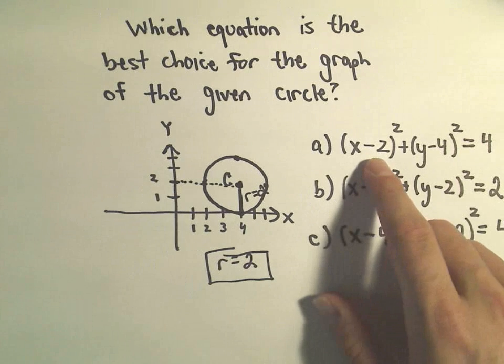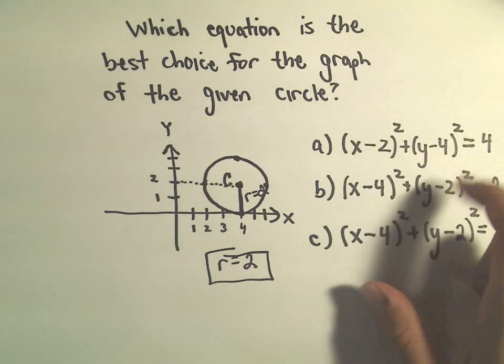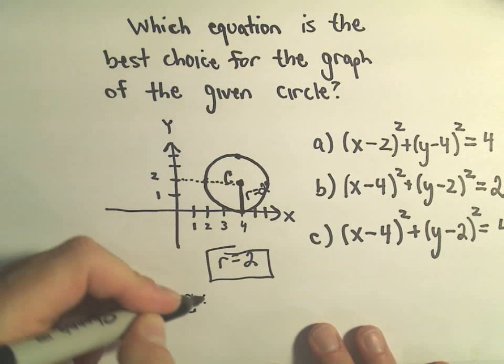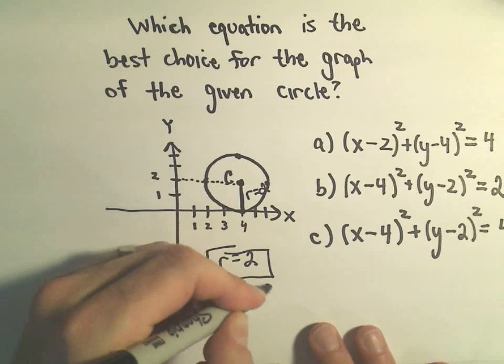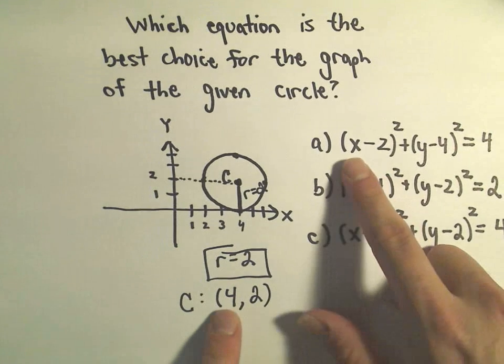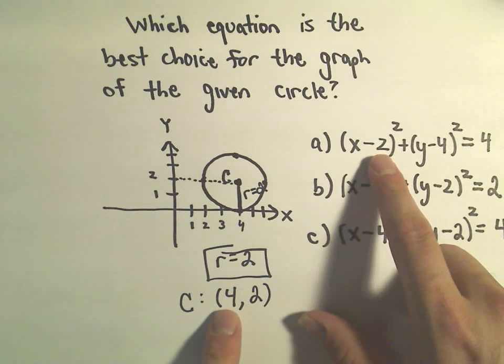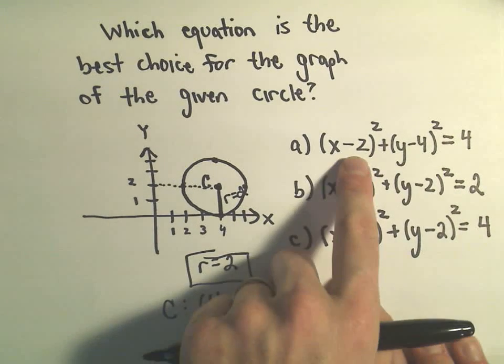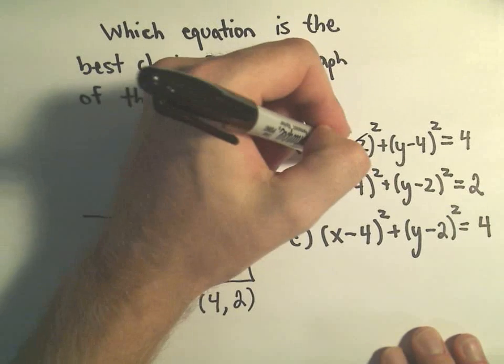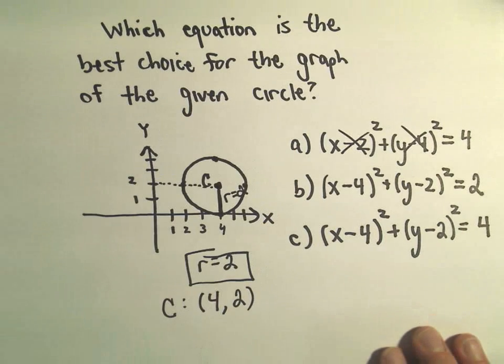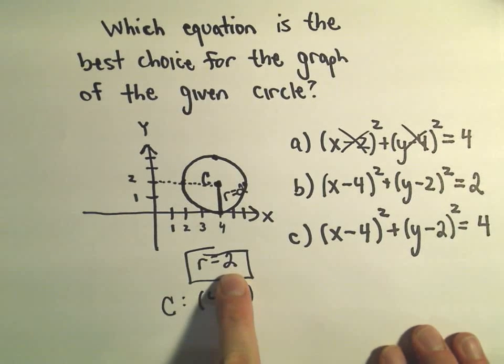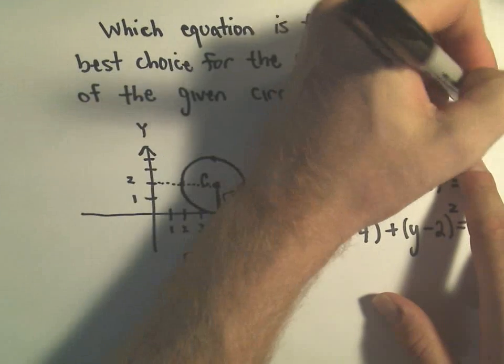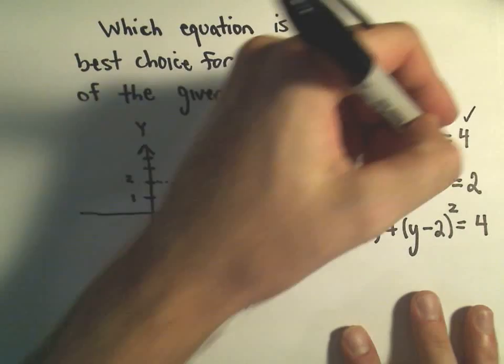So (x-2)² + (y-4)² = 4. Is this correct? Well, again, notice it's centered at positive 4, 2. So we should have x-4 in the first set of parentheses and y-2 in the second set. So I think we've kind of got these values flip-flopped. So that's not correct. If we take the radius and square it, we would get positive 4. So that part's correct. But there's problems elsewhere. So that's not right.